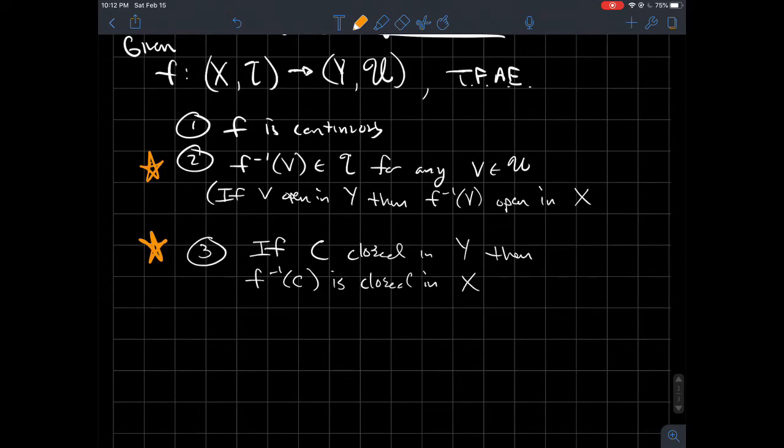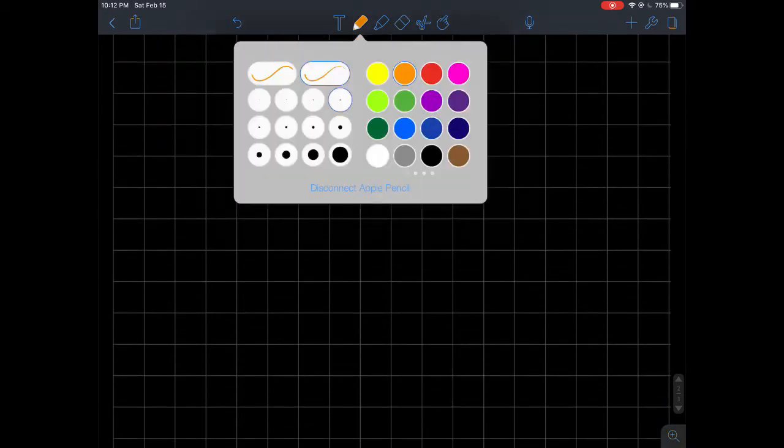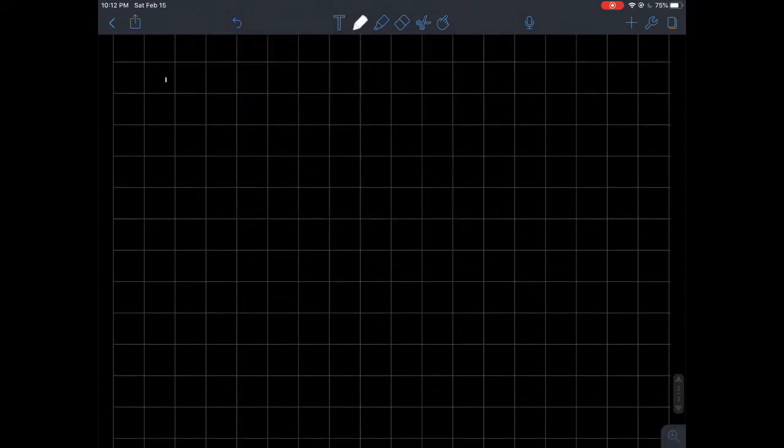Now, what that brings me to is there are two other types of functions that we're going to look at in this class. So maybe another definition, another setup here. So actually the same kind of setup. I've got some function between two topological spaces, X and Y, topology on X is T, and topology on Y is super fancy U.